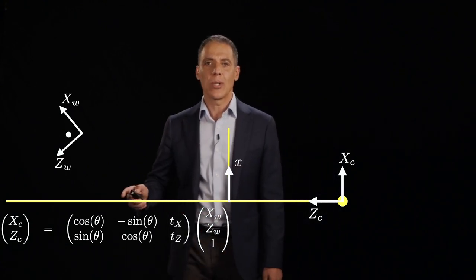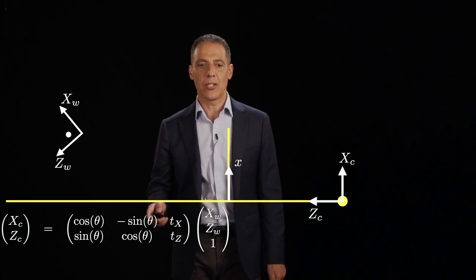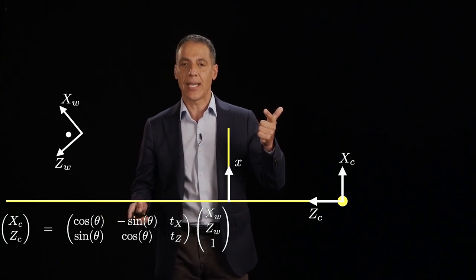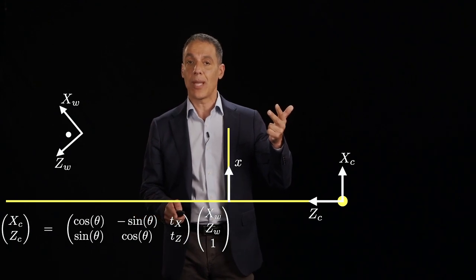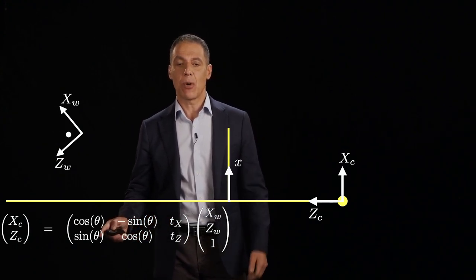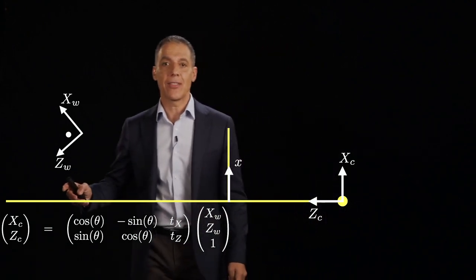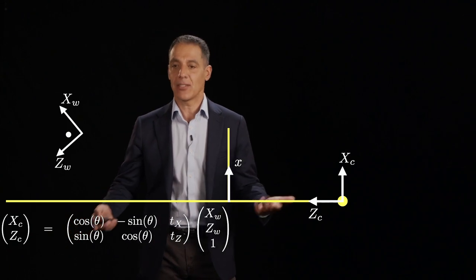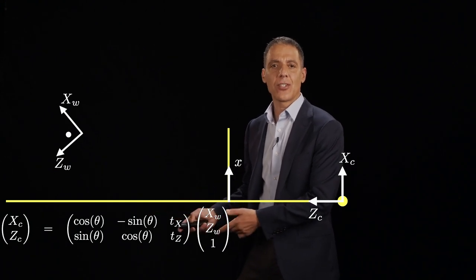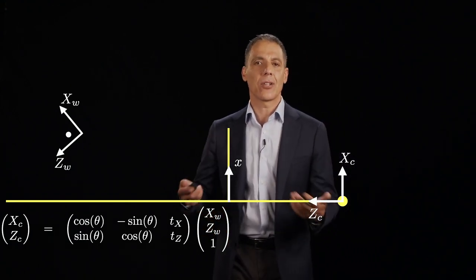Let's verify the matrix algebra. We have a column vector being multiplied by a 2×3 matrix. The first row: cos θ · XW + (−sin θ) · ZW + TX · 1, which gives XC. The second row: sin θ · XW + cos θ · ZW + TZ · 1, which gives ZC. So all I've done is bundle the rotation and translation into a single matrix by appending the homogeneous coordinate 1 to the world point — just an algebraic nicety.